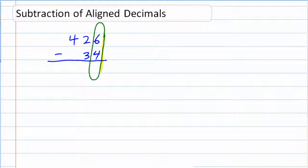So if I'm just looking at the 6 and the 4, then 6 minus 4 gives me 2. That goes right below it. And then I just move to the left.